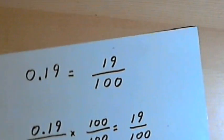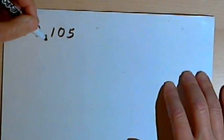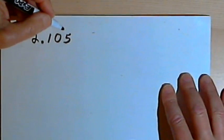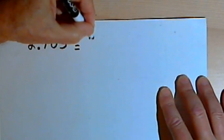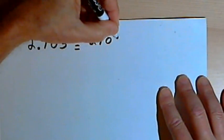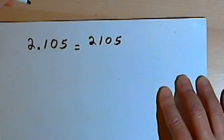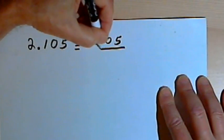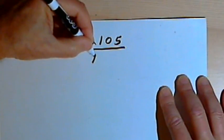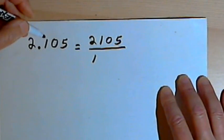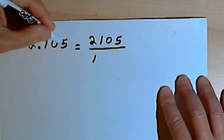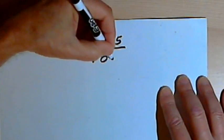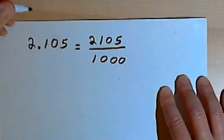Let's look at one more. So here I've got 2.105. Using the first method, I'm going to rewrite it without the decimal point, 2105. That will be the numerator. The denominator will begin with a 1, and I'll count the number of digits to the right of the decimal point. There are three digits there. So I'll put three zeros after that 1 in the denominator.